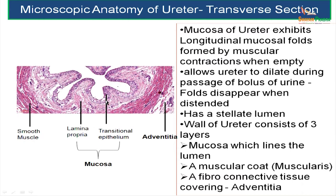The first layer, the innermost layer, is the mucosa. Then a muscular coat, which is also called the muscularis. The outermost coat is a fibro-connective tissue covering, that is adventitia. So the three layers in the wall of the ureter are mucosa, muscular coat, and adventitia.